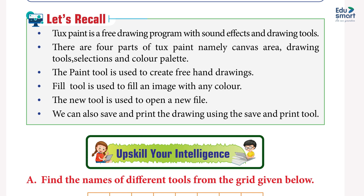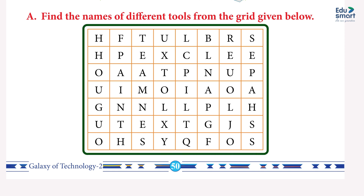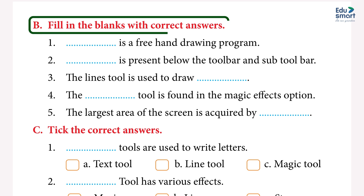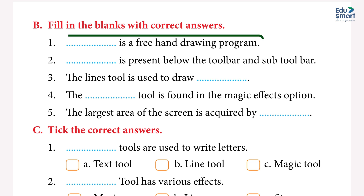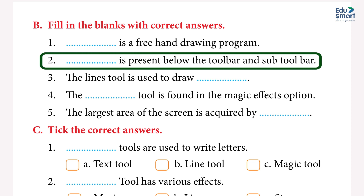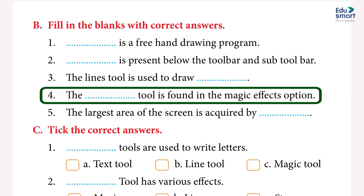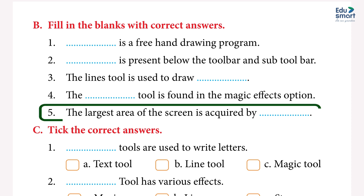Upscale your intelligence. A: Find the names of different tools from the grid — answers: paint, text, lines, shapes. B: Fill in the blanks: 1. Tux Paint is a freehand drawing program. 2. Color palette is present below the toolbar and sub-toolbar. 3. The Lines tool is used to draw straight lines. 4. The fill tool is found in the Magic effects option.